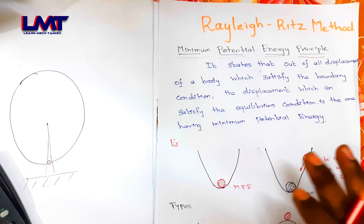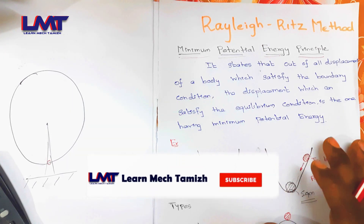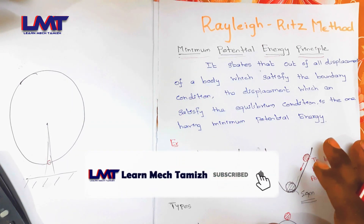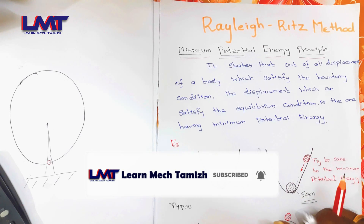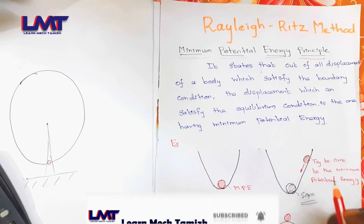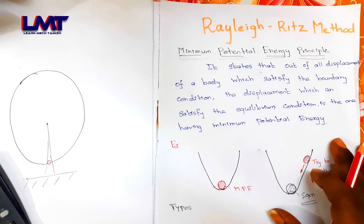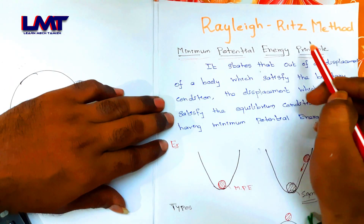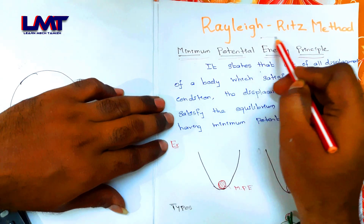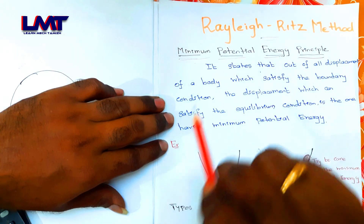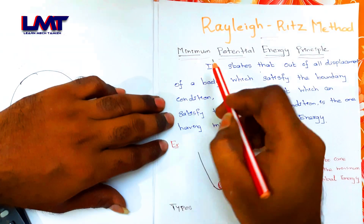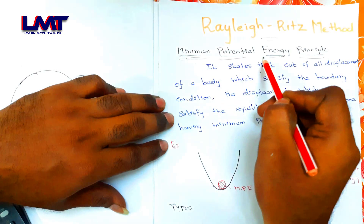Please subscribe to our channel and click on the bell icon. The Rayleigh-Ritz method — when you solve a problem using the minimum potential energy principle, this is the approach we use.